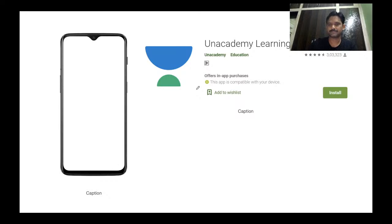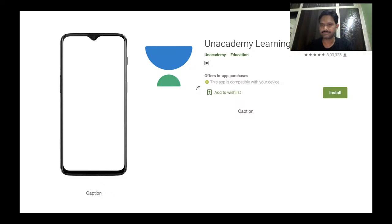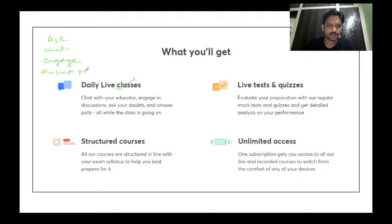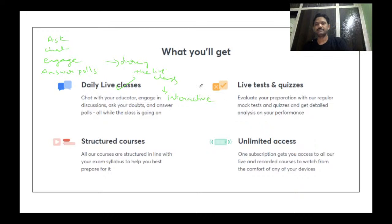You need to download and subscribe to the An Academy learning app to avail the best facilities of the platform. The advantages include daily live classes where you can ask questions, chat with your educator, engage in discussions, and answer polls. All these things can be done during the live class.